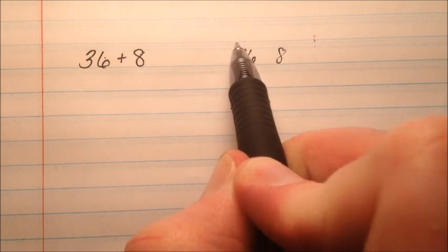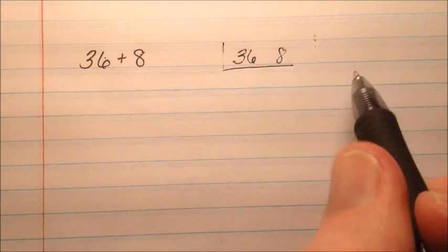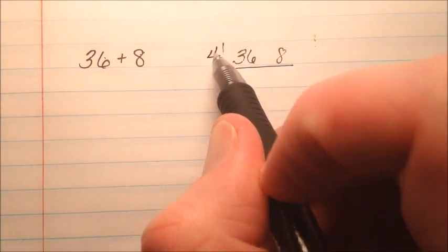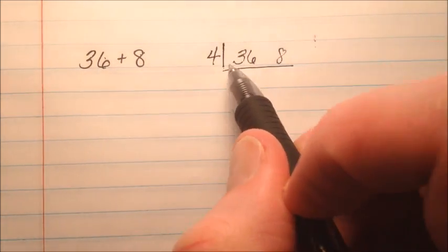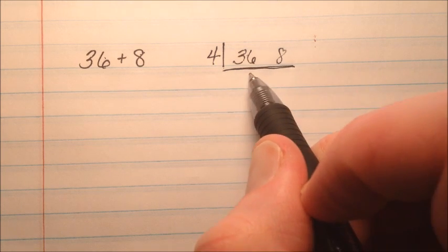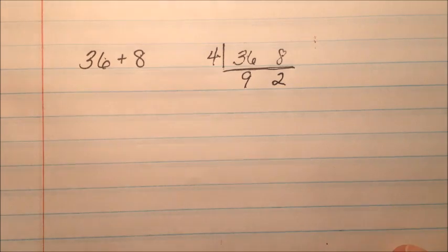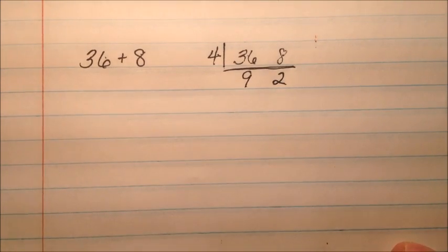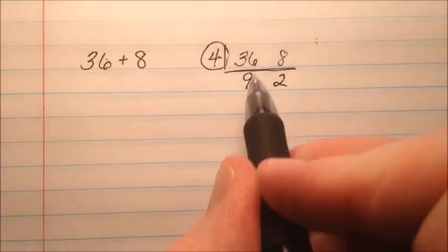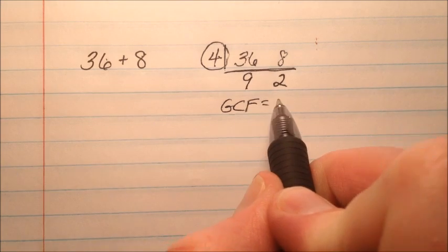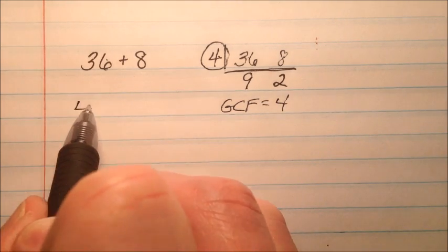So the 36 and 8, we're going to find the greatest common factor. I see I can pull 4 out of both of those numbers and when I do, 36 divided by 4 is 9, 8 divided by 4 is 2, so we have 9 and 2. So 4 is my GCF, so I'm going to write that out front here.